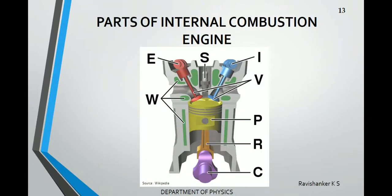Hi all, my name is Ravi Shankar. The topics I am going to cover in this presentation are parts of the internal combustion engine and the classification of the internal combustion engine based on number of strokes per cycle. In this slide you can see an image of an internal combustion engine. The most important part of an engine is the engine cylinder — it is inside this cylinder that all the activities take place. The next part is called the valve, marked as V in the figure. The function of the valve is to control the amount of air and fuel inside the engine cylinder.